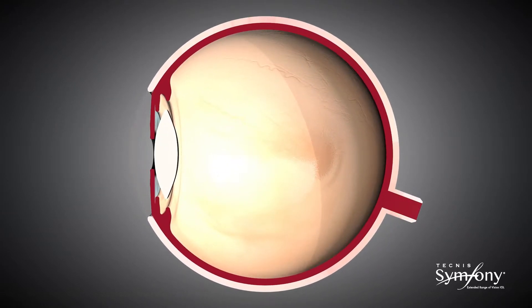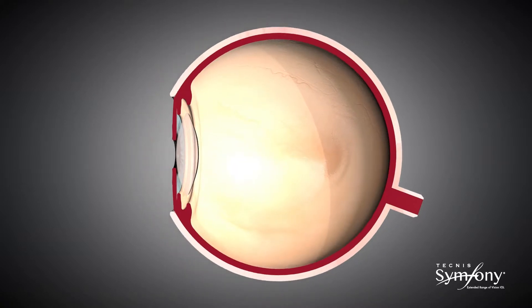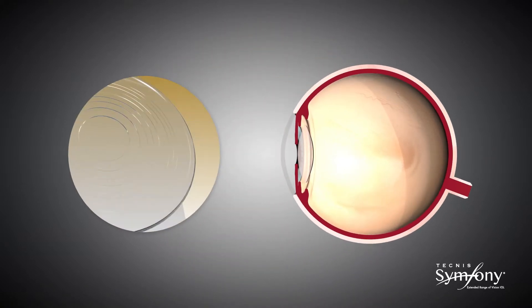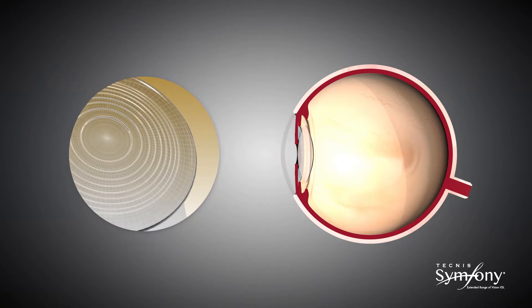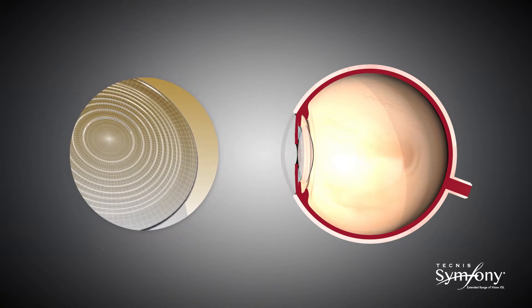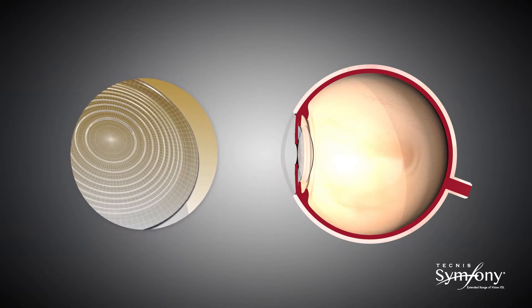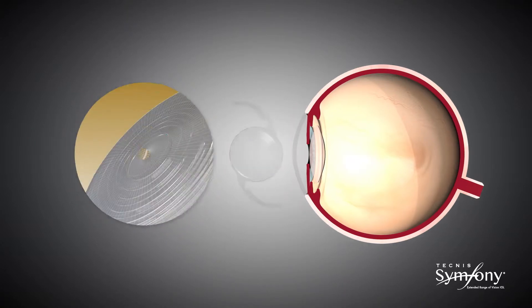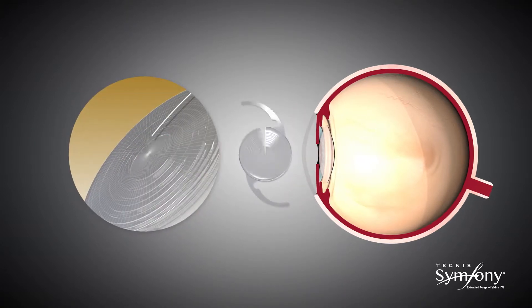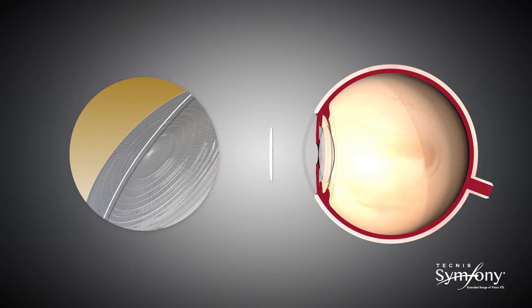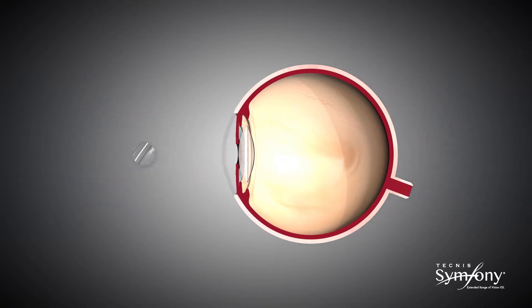Technis Symphony IOL delivers on this promise by utilizing two proprietary complementary enabling technologies: the Echelette design that extends the depth of focus, and the achromatic technology which corrects chromatic aberration.